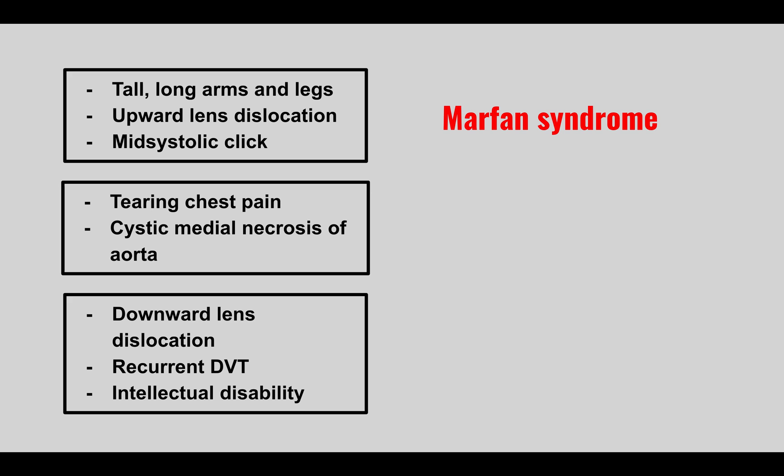The next condition can be associated with Marfan syndrome and presents with tearing chest pain and cystic medial necrosis of the aorta. This is aortic dissection — the aorta becomes very weak because of the fibrillin mutation, causing the aorta to dissect and producing sudden tearing chest pain, which is a very important complication of Marfan syndrome.